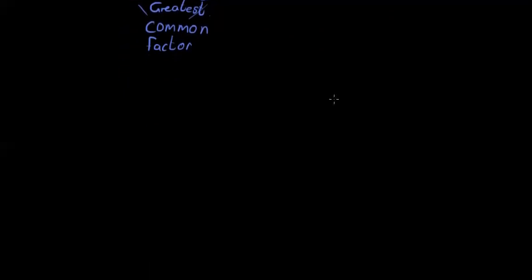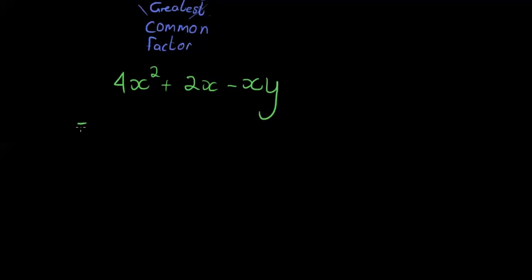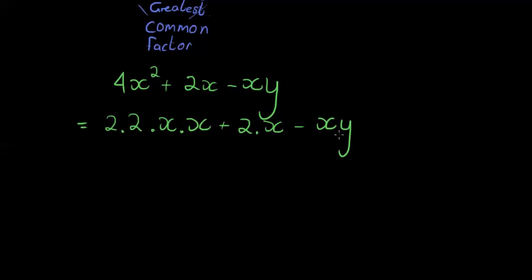Let's do a few more examples. Say I've got 4x² + 2x − xy. My first step is to write everything out in its factors: 4x² = 2 times 2 times x times x; 2x = 2 times x; and −xy = −(x times y). Now, which factor is common to every term? We have a 2 in the first two terms but not the last.